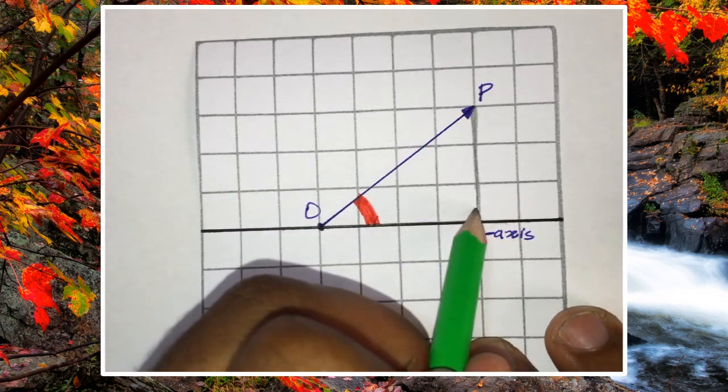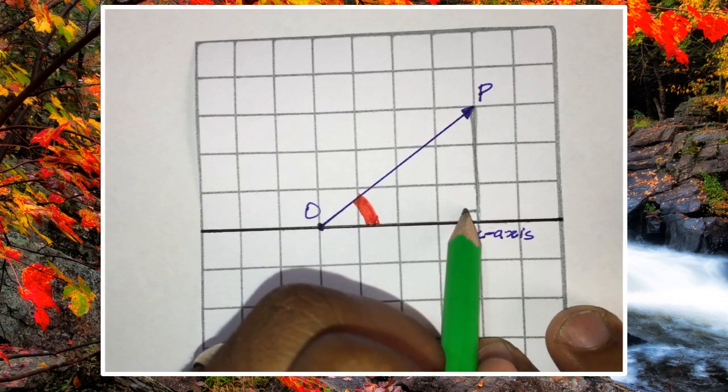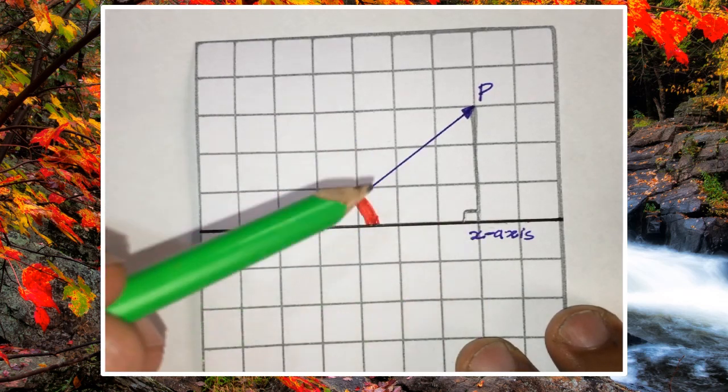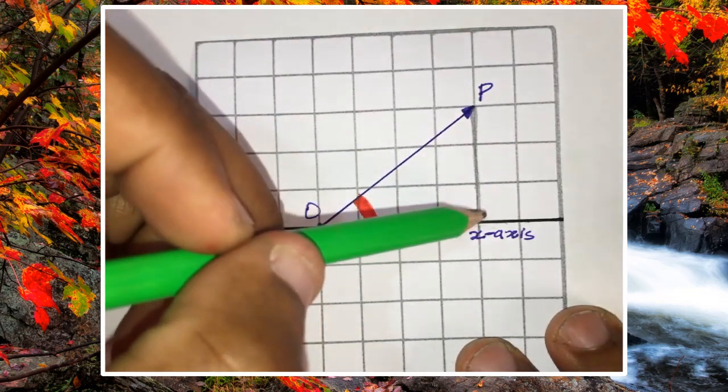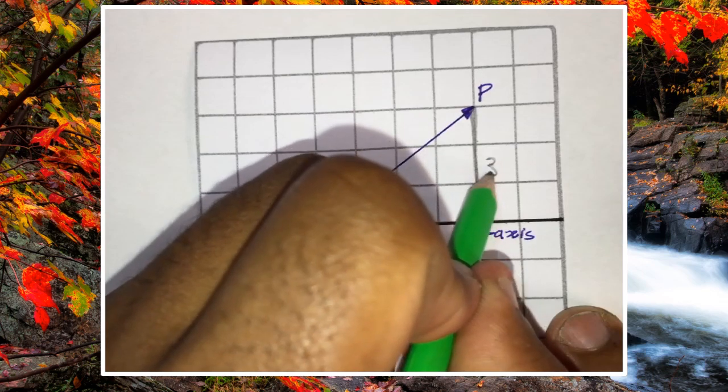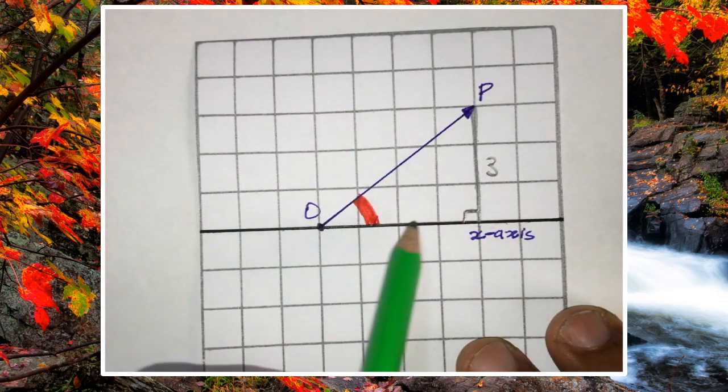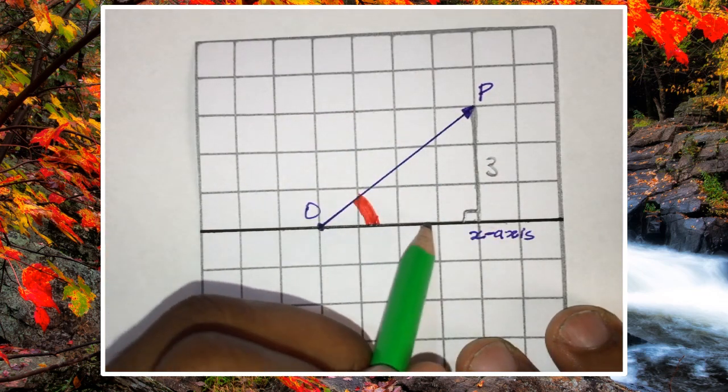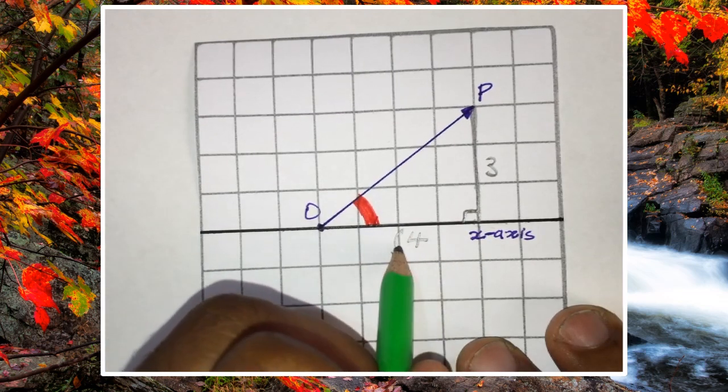be a 90 degree angle. Good. Now if it is that I could count this, it would be one, two, three. And if it is that I could count this, it would be one, two, three, four. So